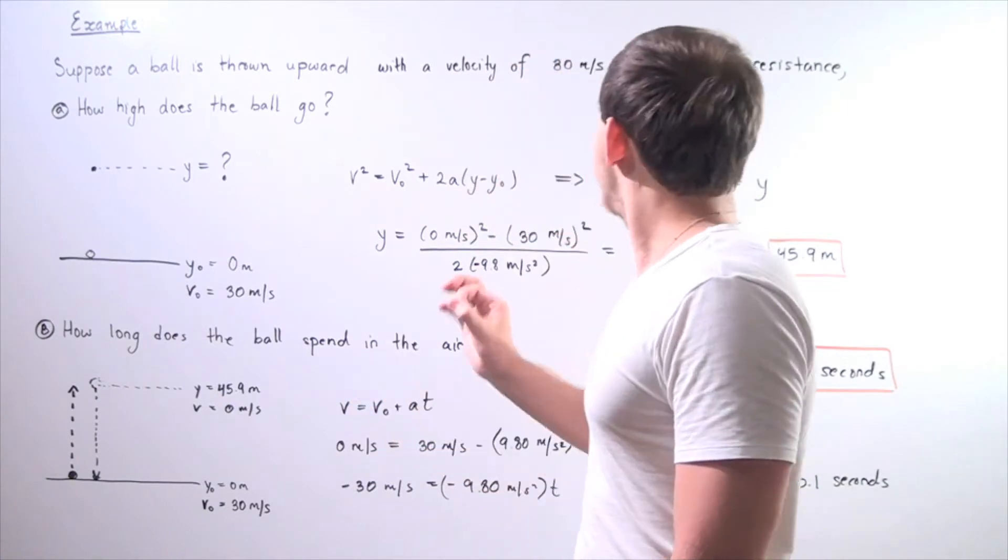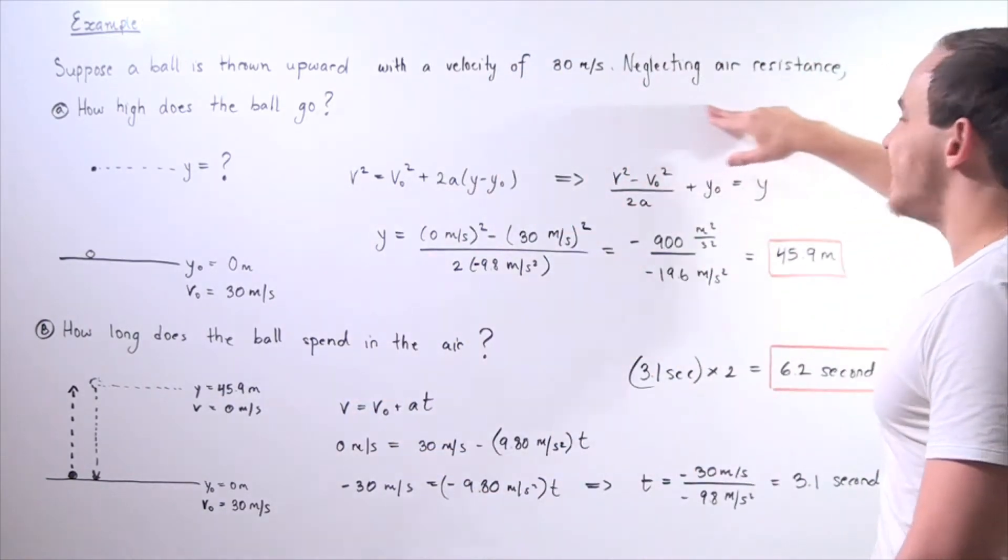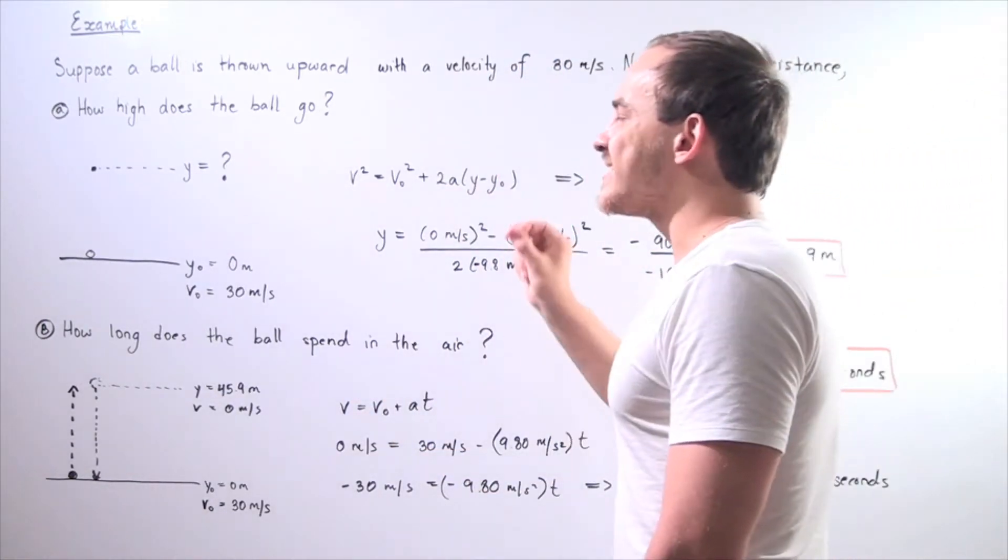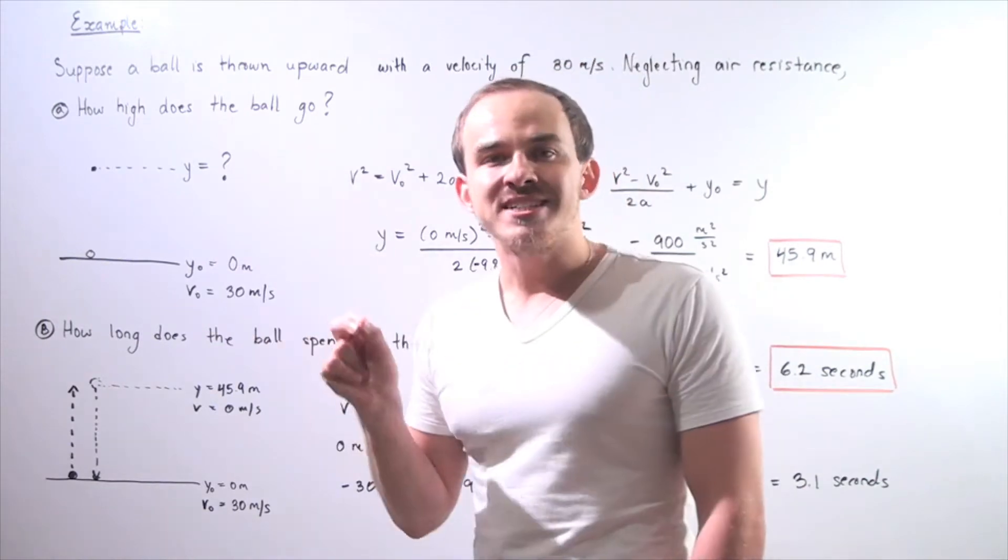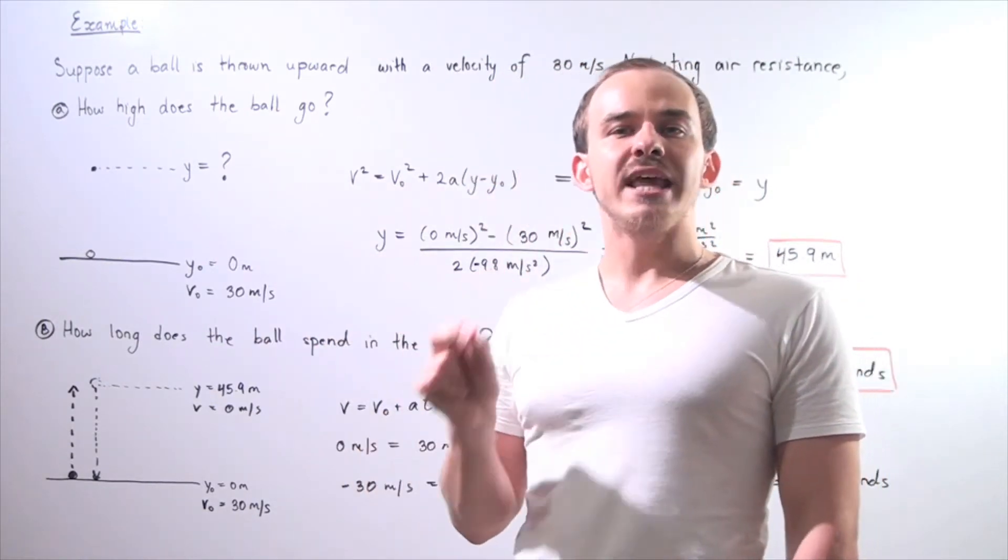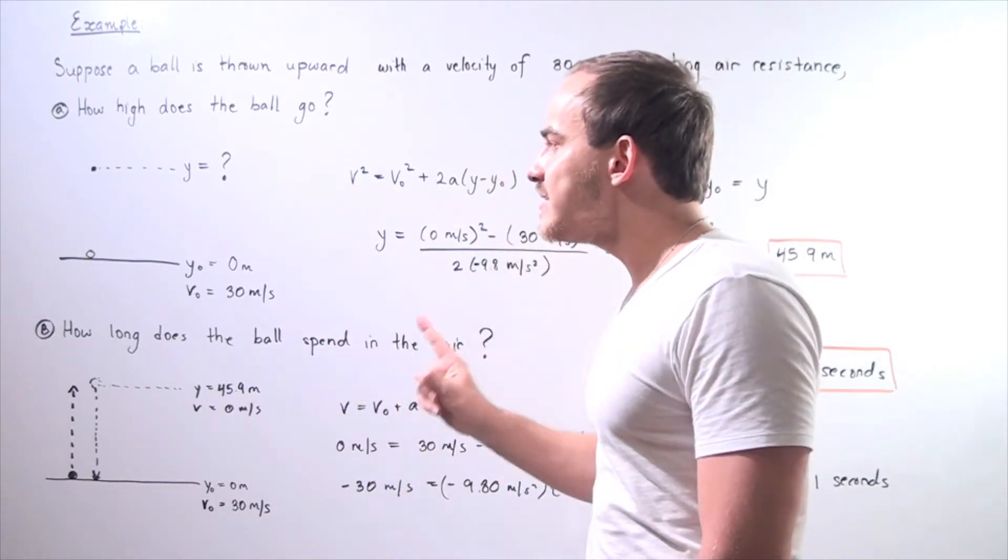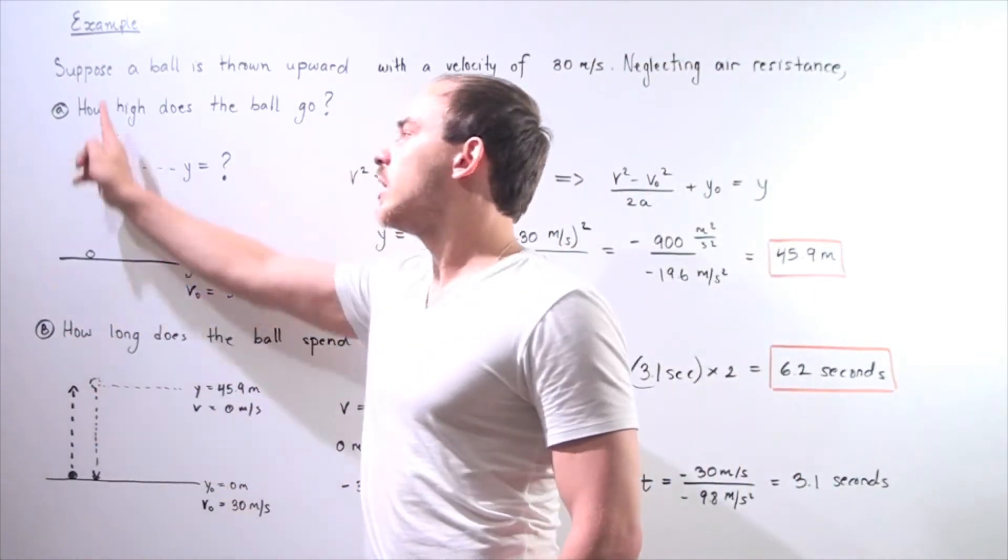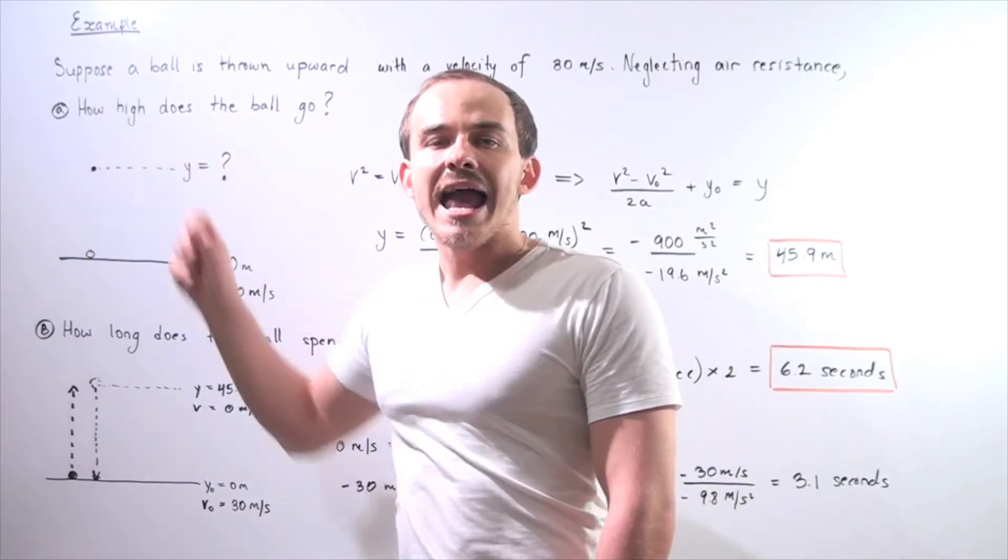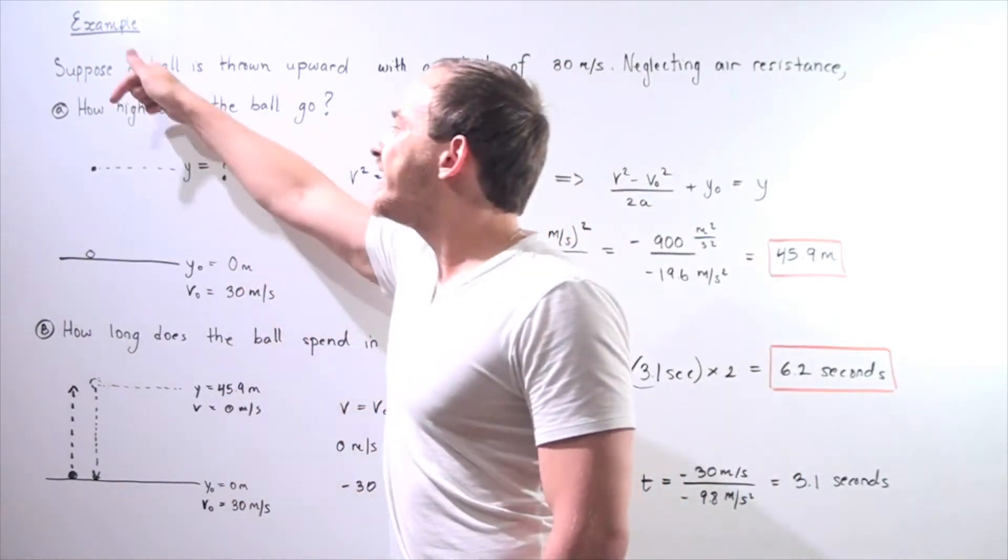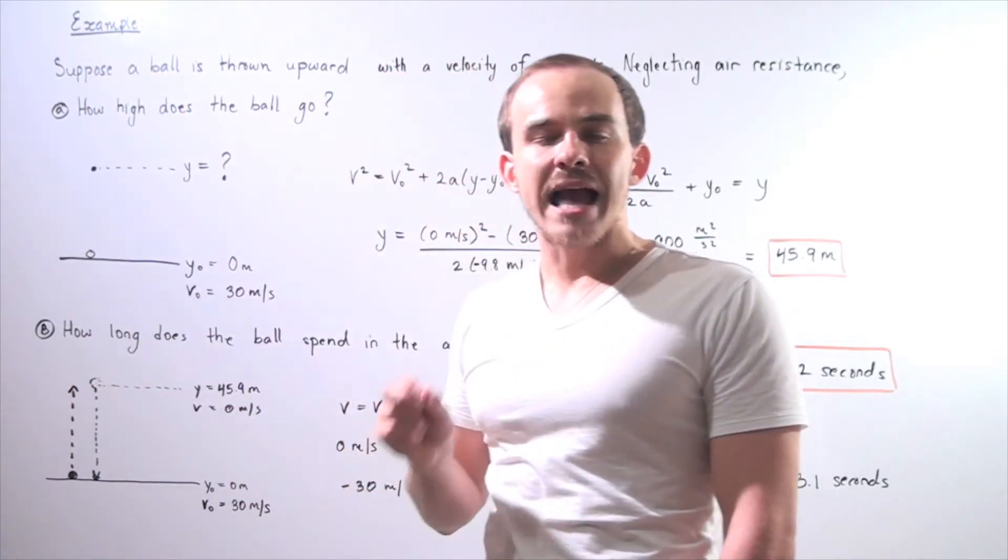Now we know, because we are told, since we're neglecting air resistance, our acceleration is the gravitational constant, 9.80 meters per second squared.